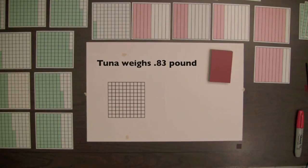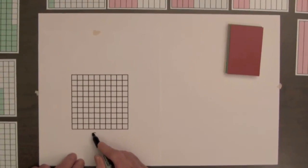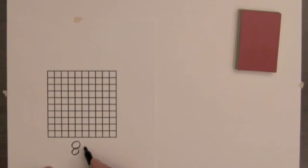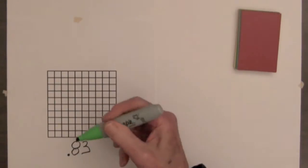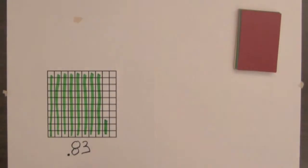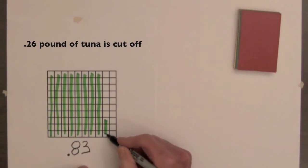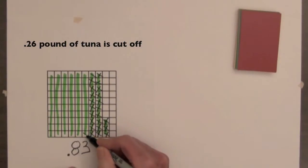If the weight of tuna at a fish counter is eighty-three hundredths of a pound, what is the weight after twenty-six hundredths of a pound is cut off? We shade the decimal square for eighty-three hundredths, then cross off twenty-six hundredths to illustrate the portion cut off.